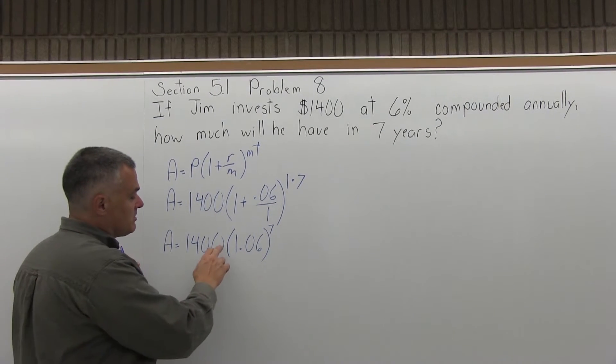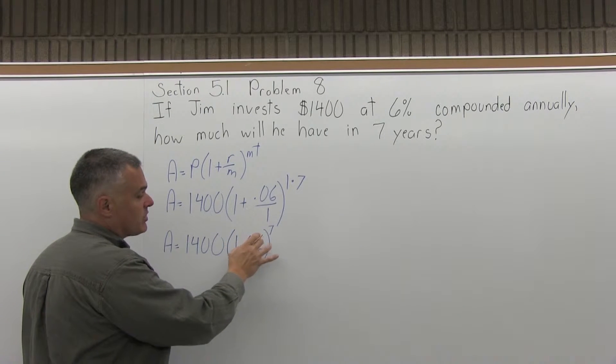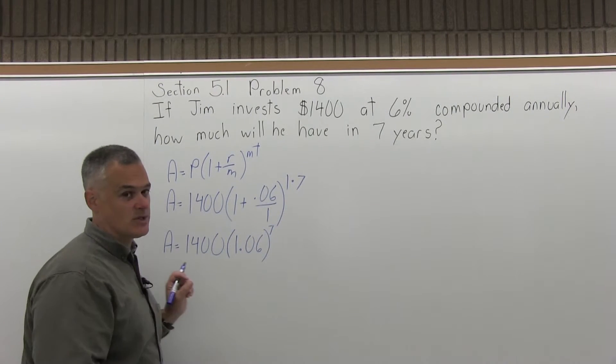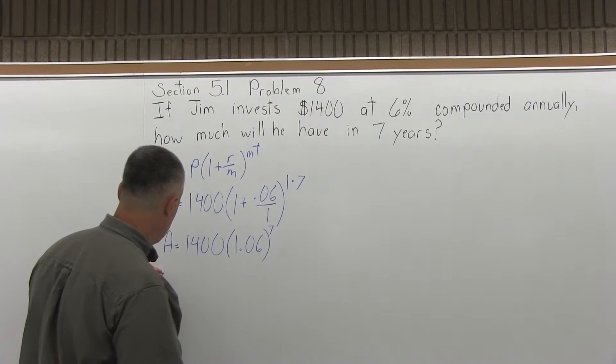There is a multiplication of 1,400 times the 1.06, and there's 1.06 to the 7th power, an exponent also. You have to do the exponent first. That's just the rule. You have to.